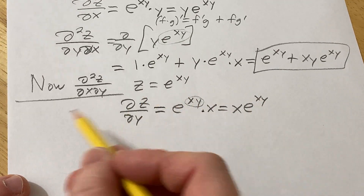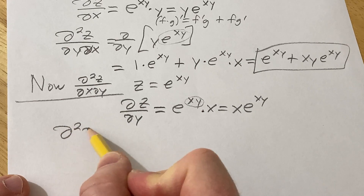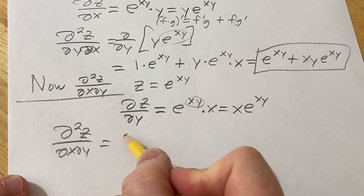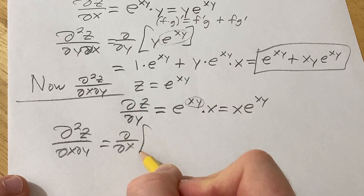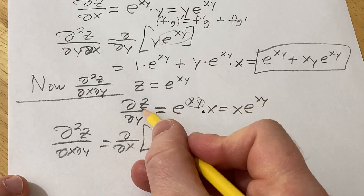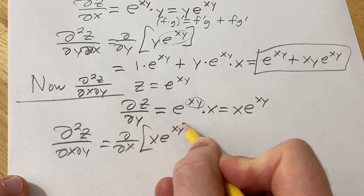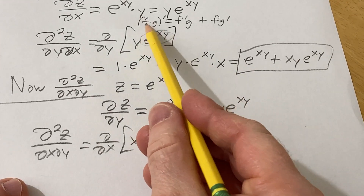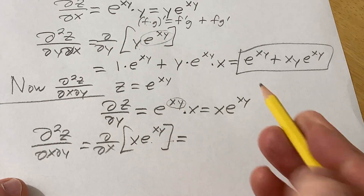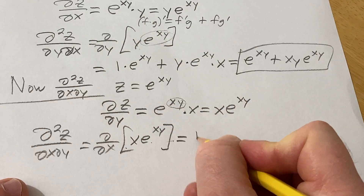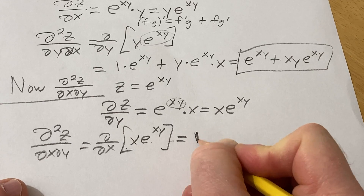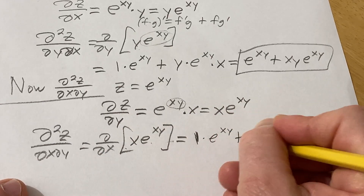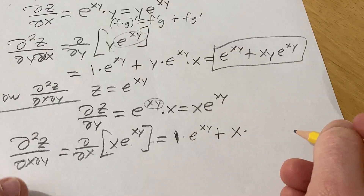And now we differentiate again. We're looking for del/del x of what we just found — del z/del y — which is x·e to the xy. Again, product rule. This is your first function, this is your second. It's the derivative of the first, which is 1 since we're differentiating with respect to x, times the second, plus the first times the derivative of the second.